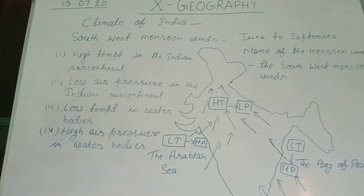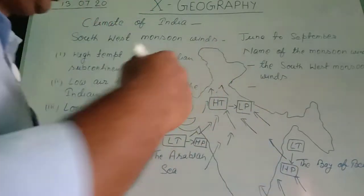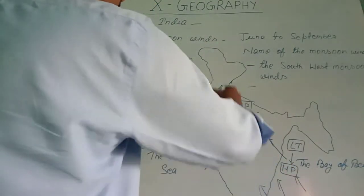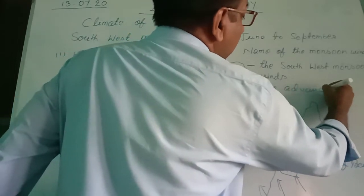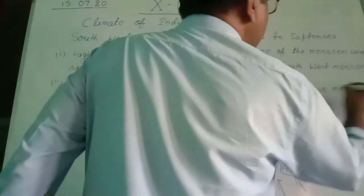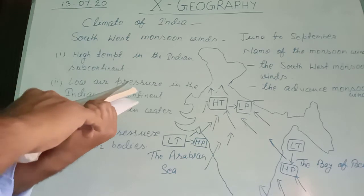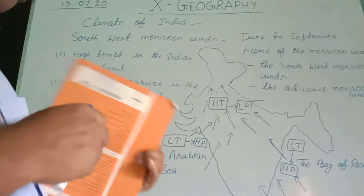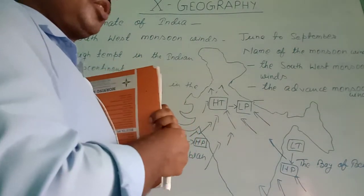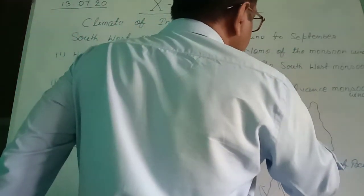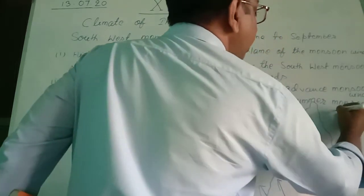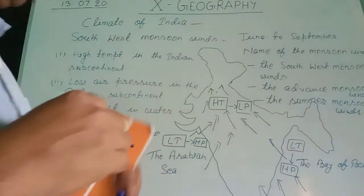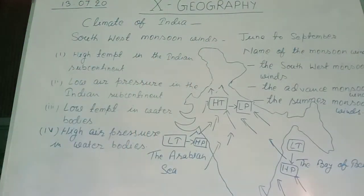Other names are also given to the southwest monsoon wind. On the basis of its nature — since it is moving forward — it is also known as the advanced monsoon winds. A third name is based on its season: since this is the summer season, it is also called the summer monsoon winds. So these monsoon winds have three names: first, southwest monsoon winds; second, advanced monsoon winds; third, summer monsoon winds.